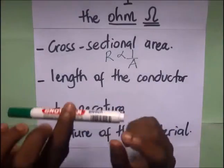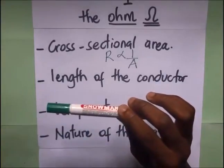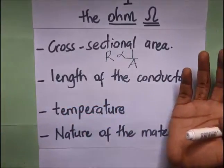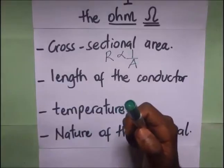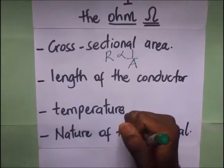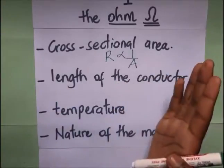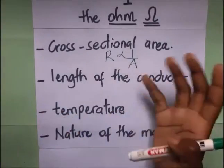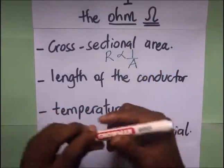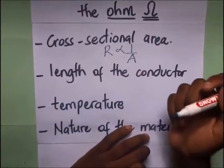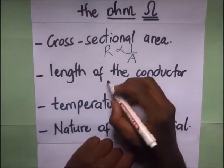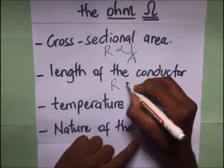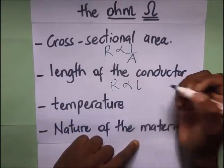So in other words, if the conductor is very long, it means that the resistance will be very high because the electrons will be traveling and colliding multiple times. If the conductor is shorter, the resistance in that conductor will also be lower. This leaves us with the conclusion that the resistance of a conductor is directly proportional to the length of that conductor.